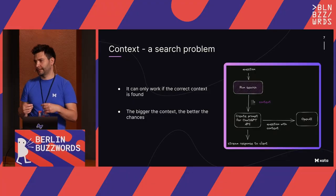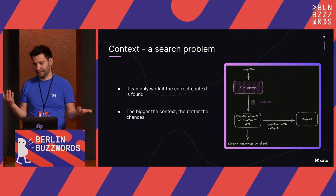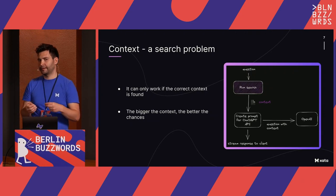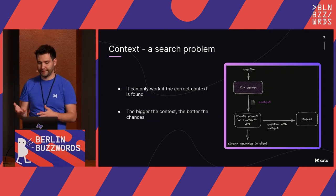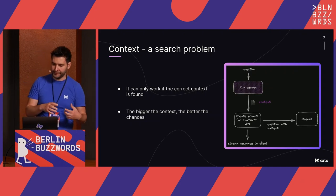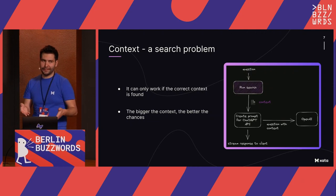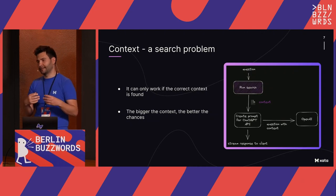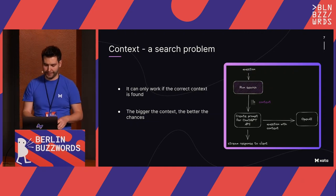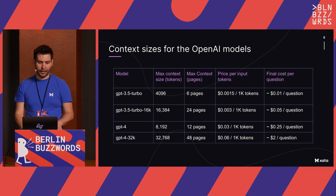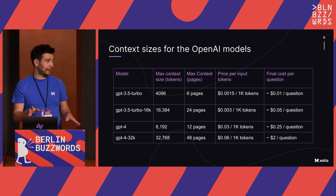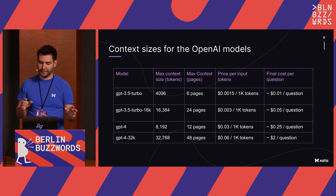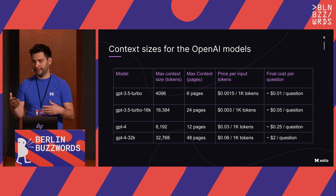And then the context — how do you find the right pages to feed to the model? That's a search problem. You need to search based on the question to find which documentation pages are most likely to contain the answer. The bigger the context the model accepts, the more data you can feed it. Even if your search relevance is not perfect, you might still get the answer. We use the OpenAI models, and I did a small comparison of context size and prices.